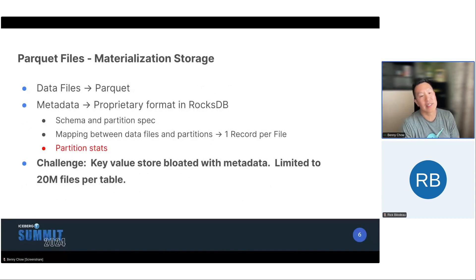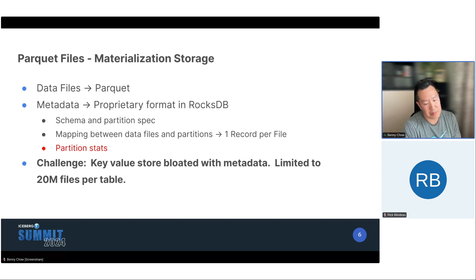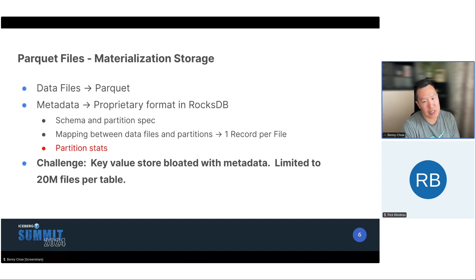Let's talk about the implementation journey. Before, Dremio has had this query acceleration technology for a long time. But in the beginning, the materialization storage was basically a bunch of Parquet files in the file system. The metadata over these Parquet files was in a proprietary format stored in a key-value store — in this case RocksDB. That metadata had to capture the schema, the partition spec, and for every single data file present in that materialization, which partition it belonged to. So if you had, say, 1,000 partitions and 20,000 files per partition, you're looking at 20 million records in this KV store.